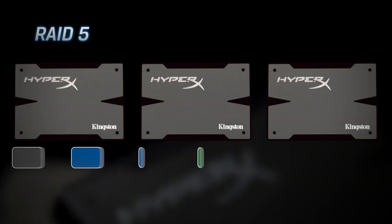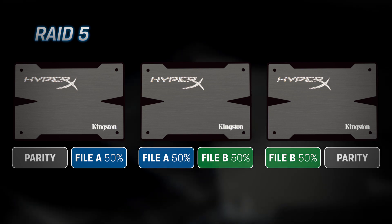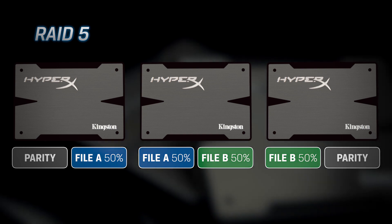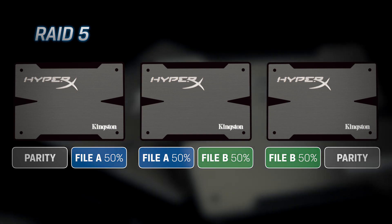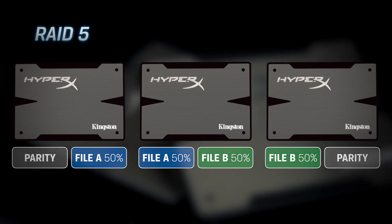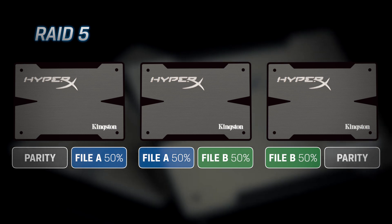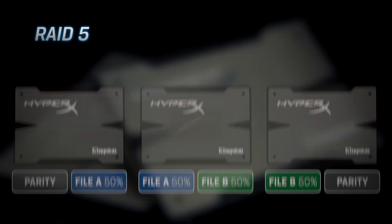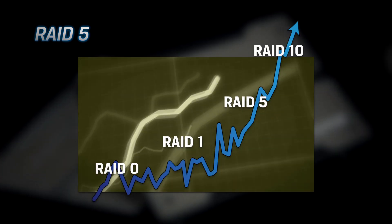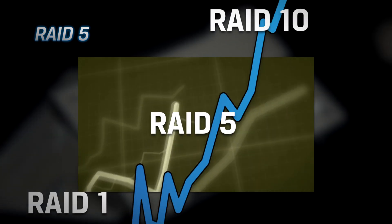RAID 5 is striping with distributed parity. The advantage of RAID 5 is it's cost effective to implement because you only lose the capacity of a single drive, regardless of the number of drives in the RAID group, and you have redundancy in the event of a drive failure.